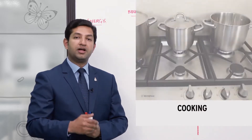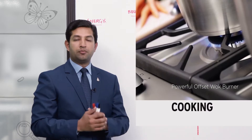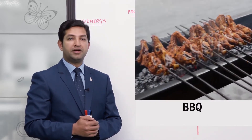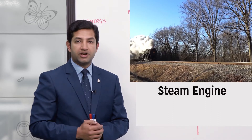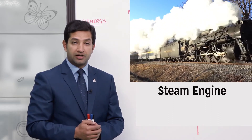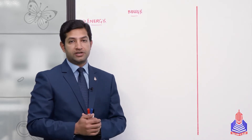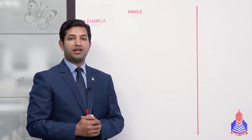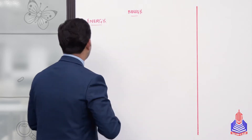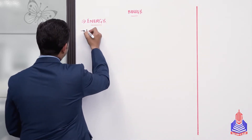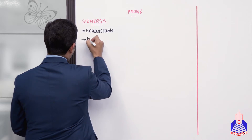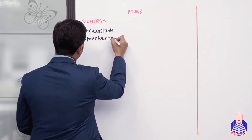بجلی کا بہت اہم کردار ہے، کھانا پکانے میں گیس کا بہت اہم کردار ہے، اسی طرح BBQ activities میں کوئلے کا بہت اہم کردار ہے جس سے transportation کا آغاز ہوا اور steam engines بنے۔ تو توانائی کی پیداوار کے لیے ہم قدرتی وسائل کا استعمال کرتے ہیں جن کو دو بڑے groups میں divide کیا جا سکتا ہے: exhaustible natural resources اور inexhaustible natural resources۔